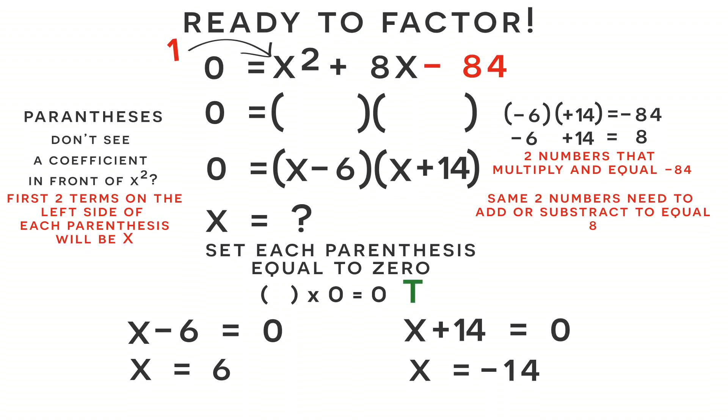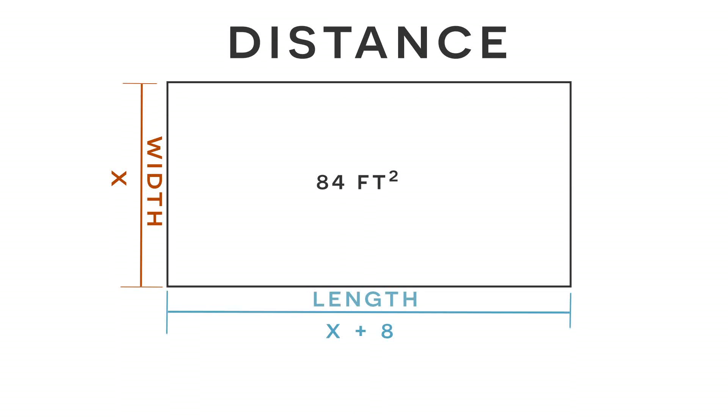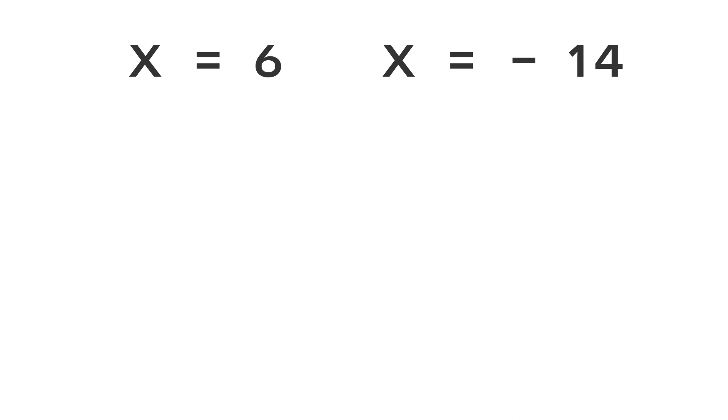So notice that we have two solutions to our quadratic equation, which is completely normal. However, for this particular example, we are not allowed to have a negative solution. That's because we are dealing with distance. x represents the width of the rectangle or the distance of the width of the rectangle and distance can never be negative. So because distance can never be negative, then our negative solution is not valid. And the only solution to this equation is x is equal to positive six.